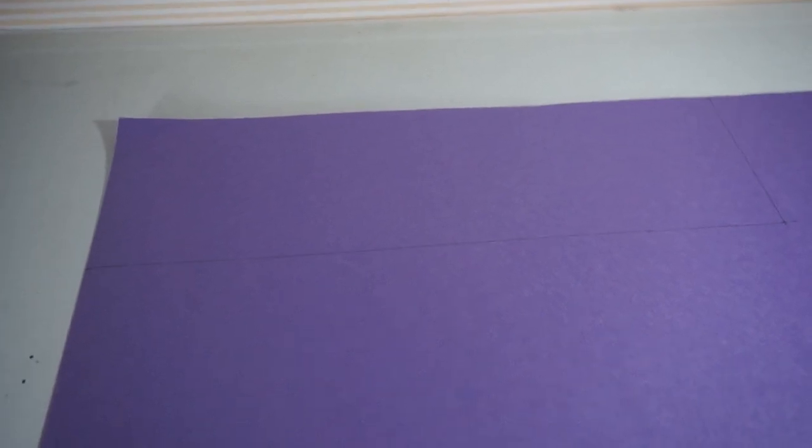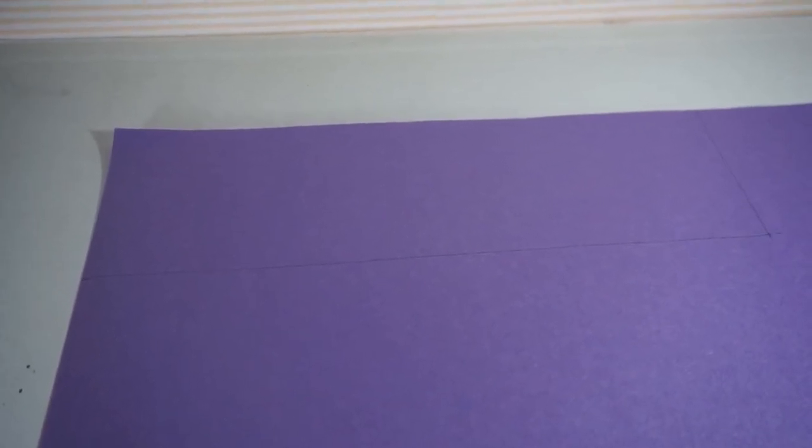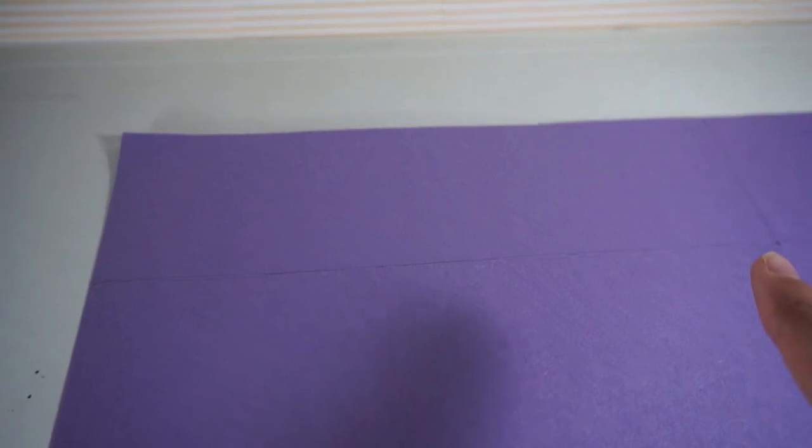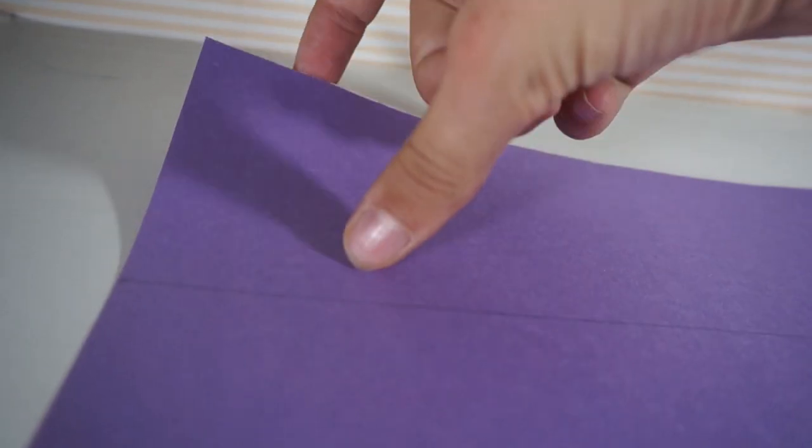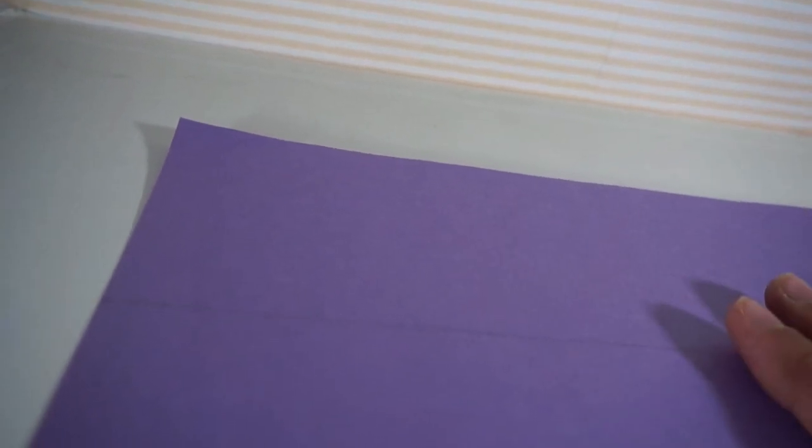The first thing you need to do is measure a rectangle that is 10 by 3 inches long and then cut it out. This is on construction paper that is double-sided which will help make your dress look a lot neater.